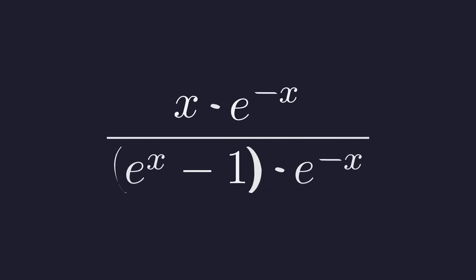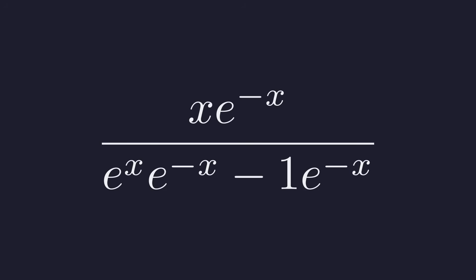Let's distribute that e to the negative x through the denominator. When we simplify, e to the x times e to the negative x cancels to 1. And there we go. This form, with 1 minus e to the negative x in the denominator, is exactly what we need.